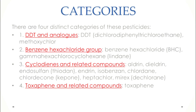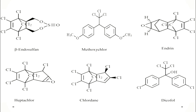The third category is cyclodienes and related compounds, which includes aldrin, dieldrin, endosulfan (also known as thiodan), endrin, isobenzone, chlordane, chlordecone (also called kepone), heptachlor, and mirex (also called dichlorine). The fourth category is toxaphene and related compounds, which includes toxaphene. These are the four types of organochlorine pesticides based on structure.